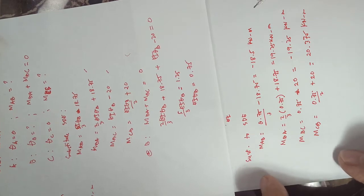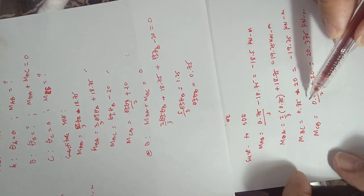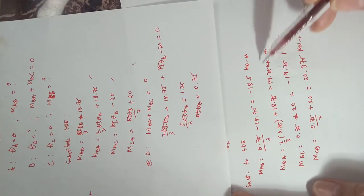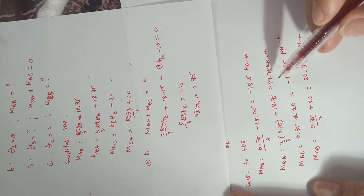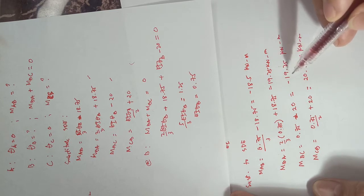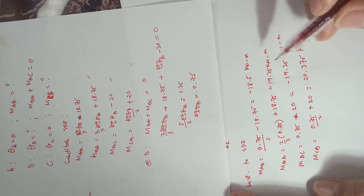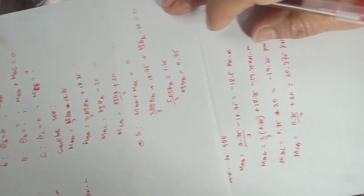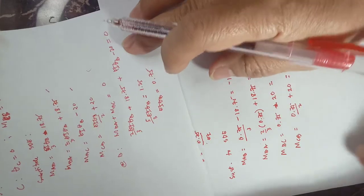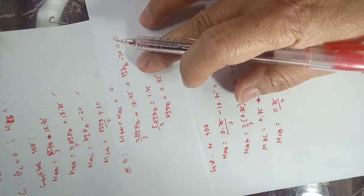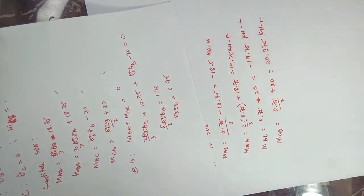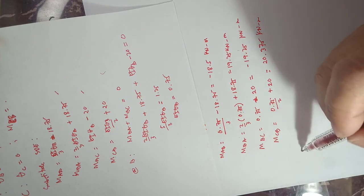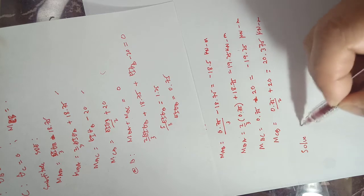The sum of the end moments M_ba plus M_bc must equal zero. You need to add them and check that they sum to zero. So you have 19.25 minus 19.25 equals zero. After determining the end moments, you apply them to each span and solve for the reactions.